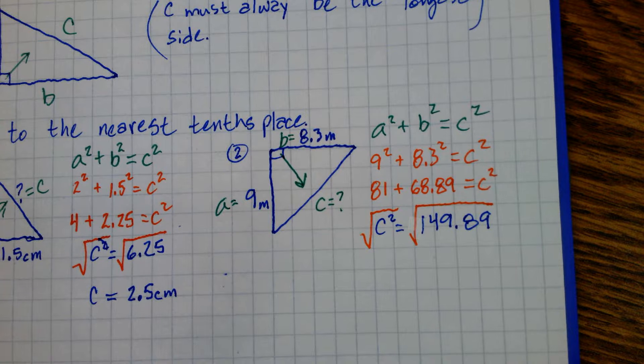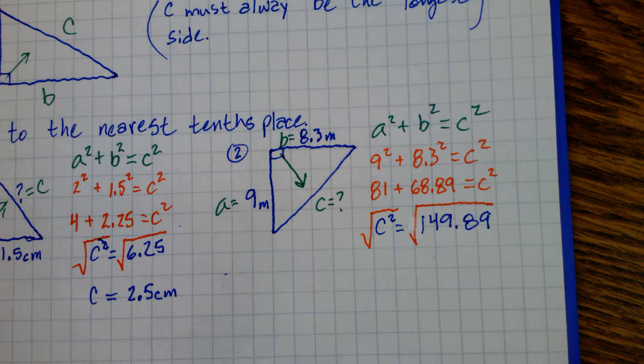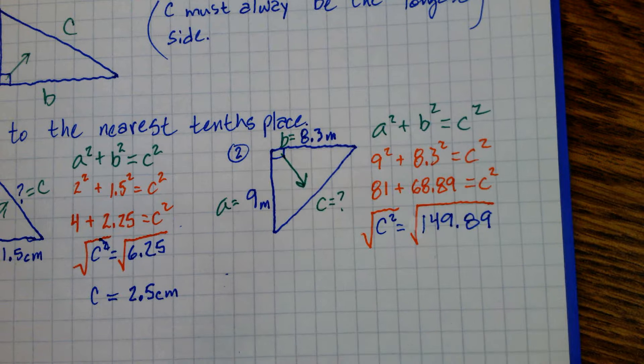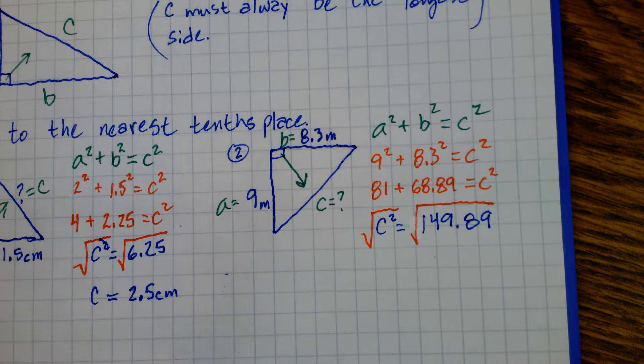So remember, we get two answers, a positive and a negative, right? We've talked about that. Why do we only take the positive one? Yeah, it's a distance. You can't have negative distances. So you throw out the negative answer. You just work with a positive one.